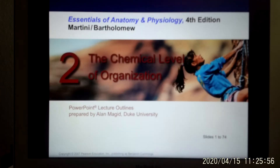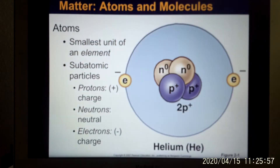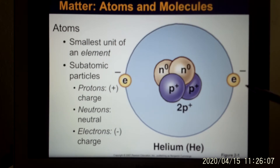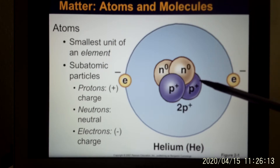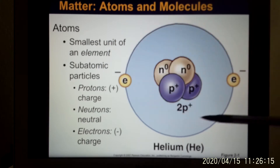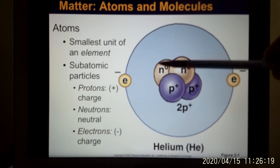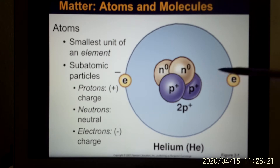We are in chemistry. The smallest unit of an element is called an atom, and this is an atom. Atom is made of three subatomic particles. You have the proton — that's positive charge — neutron has no charge, and electron has negative charge. Proton and neutron stay inside the nucleus, so the center part we call the nucleus. And outside, there's the electron.